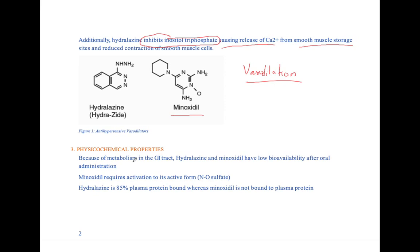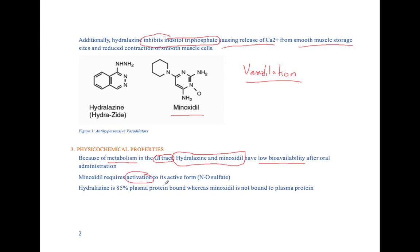Let's talk about the physical chemical properties here. Both of these drugs are actually well-absorbed orally. However, because of metabolism in the GI tract, you end up with low bioavailability. Now, minoxidil actually is a prodrug that requires activation, and the activation is done through metabolism — it's activated with NO sulfate, which we'll take a look at in the next slide. Hydralazine is 85% plasma protein-bound, whereas minoxidil is not bound to plasma protein at all.